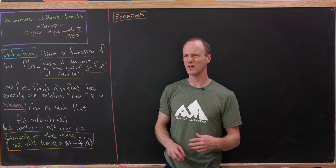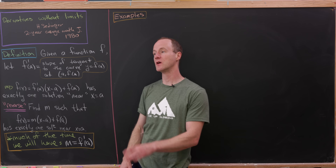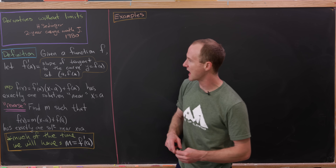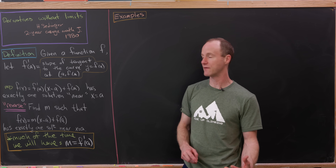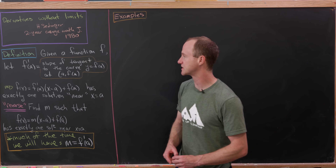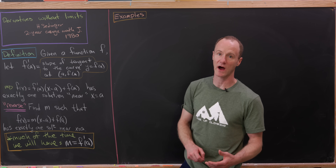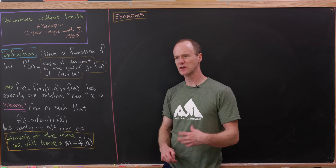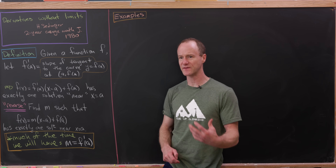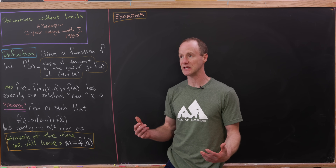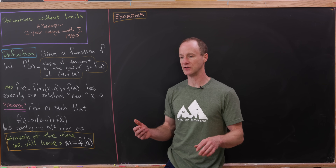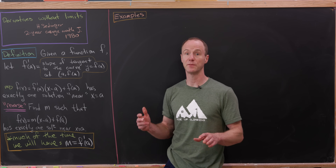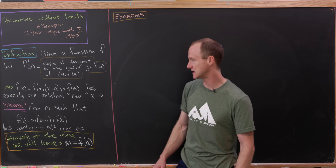Let's recall the definition of the derivative — maybe pre-defining it via a limit. Given a function f, we let f prime of a, the derivative of f at a, be equal to the slope of the tangent to the curve y equals f of x at the point a comma f of a. The way we define this naturally leads to our limit definition of the derivative if you just think about taking a secant line, which has a slope that's easy to calculate, and then limiting that secant line.